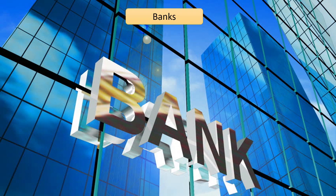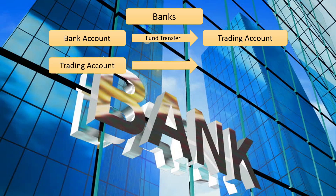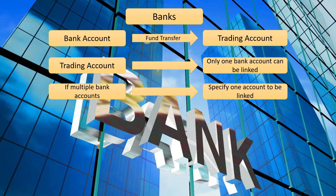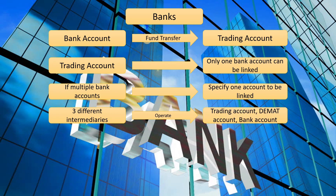Now we look into banks. Banks play a very straightforward role in the market ecosystem — they help in facilitating the fund transfer from your bank account to your trading account. For a given trading account, only one bank account can be linked. You cannot transfer money from a bank account that is not in your name. If you have multiple bank accounts, you need to specify which particular bank account will be linked to your trading account. You can remove and relink another bank account of yours, but that requires some paperwork. The money can only come in and go out of your trading account via the specified linked bank account. The three financial intermediaries operate via three different accounts: the trading account, the demat account, and the bank account — all three operate electronically and are interlinked, giving you a very seamless experience.